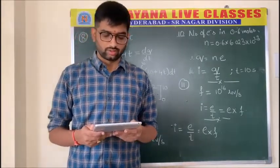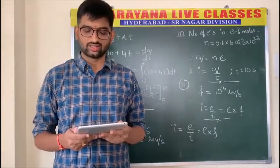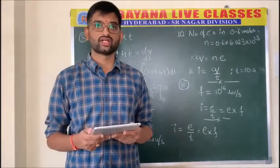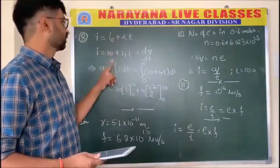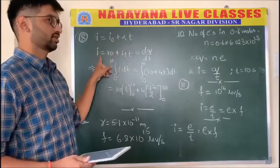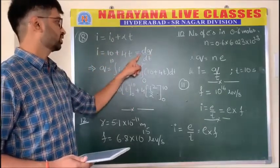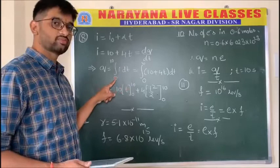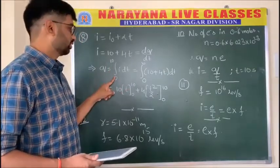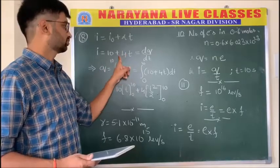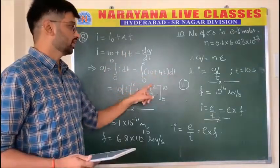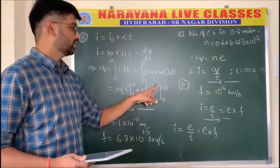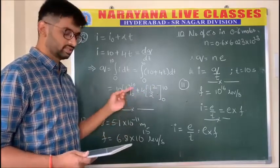Question number eight: the current through a device depends on time as I = I₀ + αt, where I₀ and α are given. Find the charge that crosses through the section of wire in 10 seconds. Since I = dq/dt, we have dq = I dt, and q is obtained by integrating I dt from 0 to 10 seconds. Integrating (I₀ + αt) dt gives I₀t + αt²/2; substituting the limits gives the required answer.